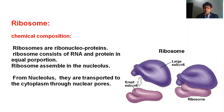The cell contains a tiny granular structure called ribosome. Palade (1955) was the first to describe ribosomes. If we look at the chemical composition, the ribosome is composed of equal amounts of RNA and protein. That is why ribosome is considered a nucleoprotein.